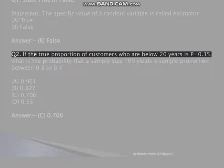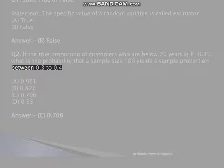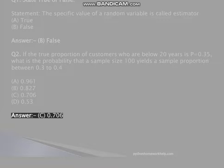Q2. If the true proportion of customers who are below 20 years is P equals 0.35, what is the probability that a sample size 100 yields a sample proportion between 0.3 to 0.4? A, 0.961, B, 0.827, C, 0.706, D, 0.53. Answer: C, 0.706.